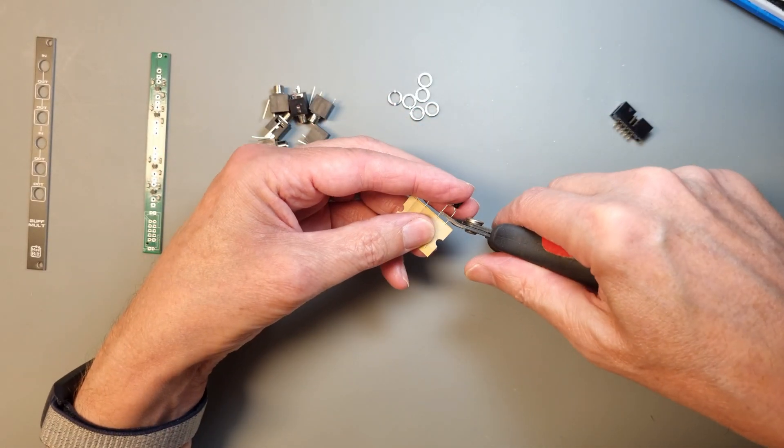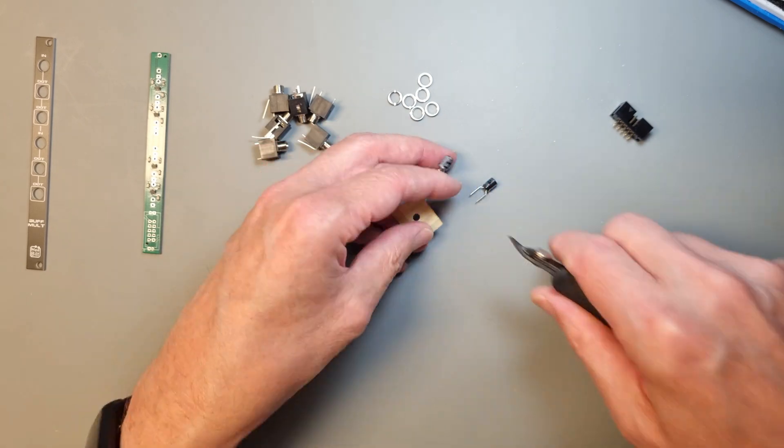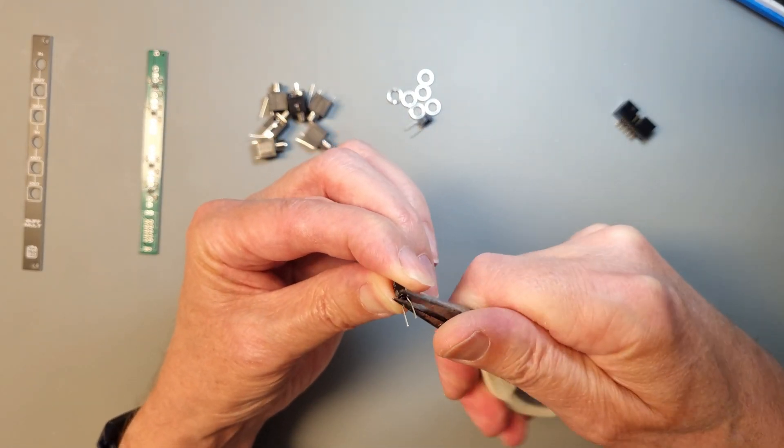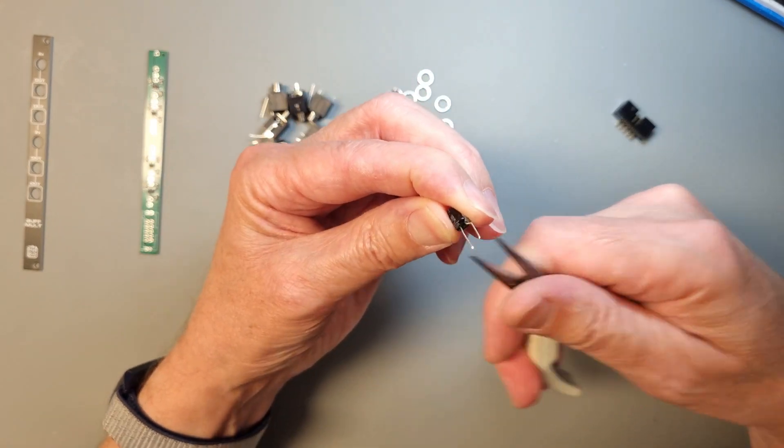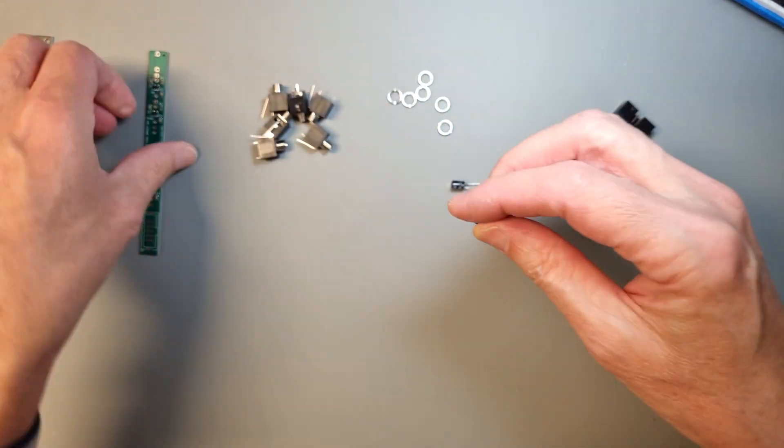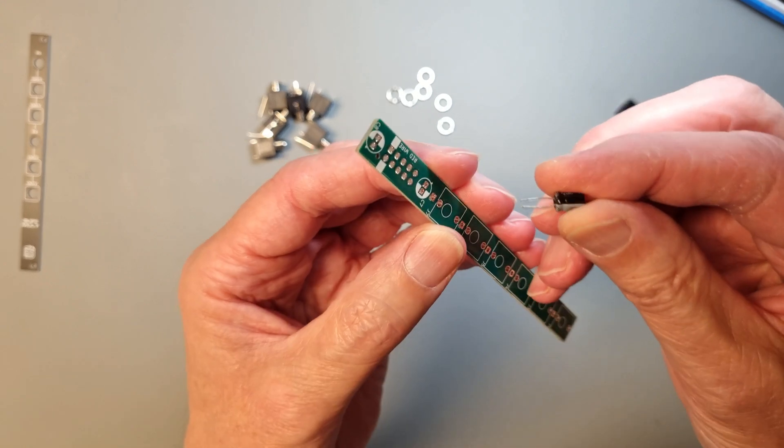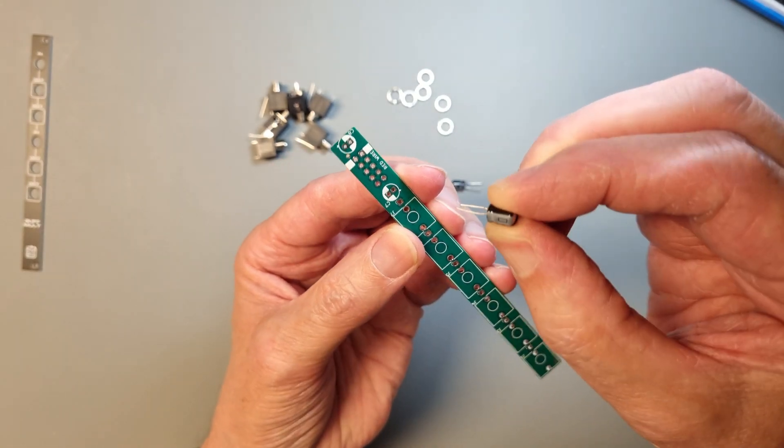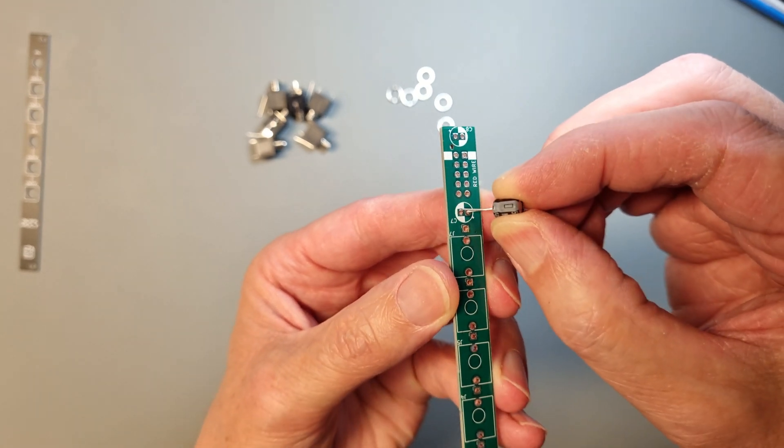Start by mounting the polarized capacitors. The minus marking on the side of the component body should be lined up with the white marking on the PCB silk print.